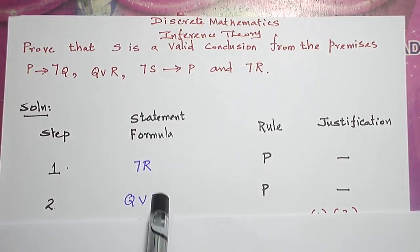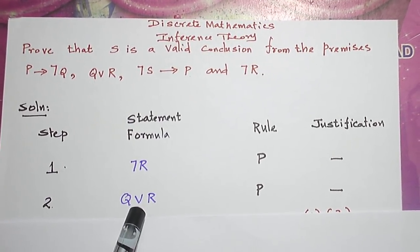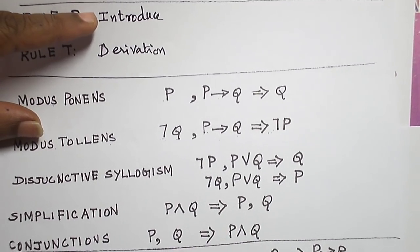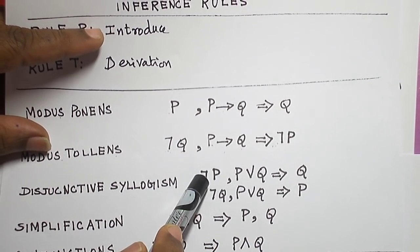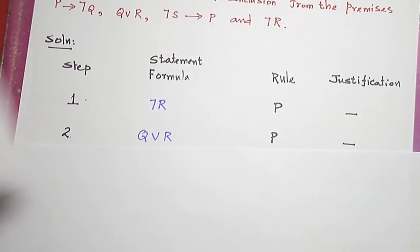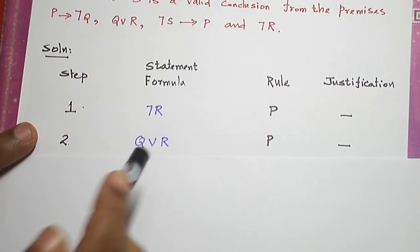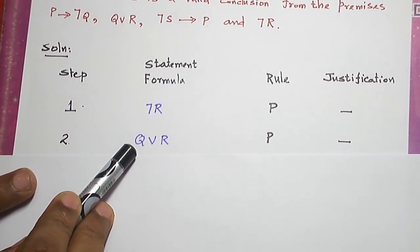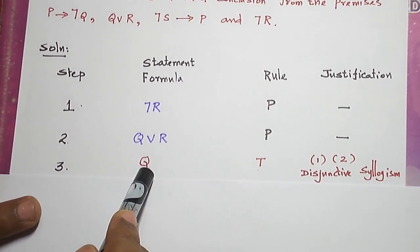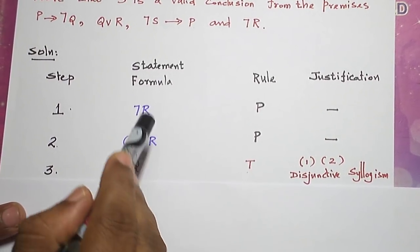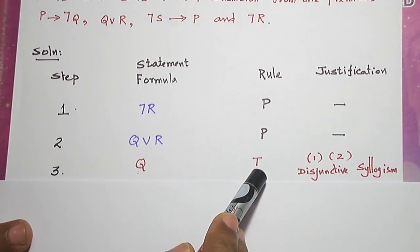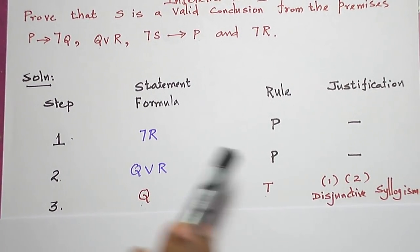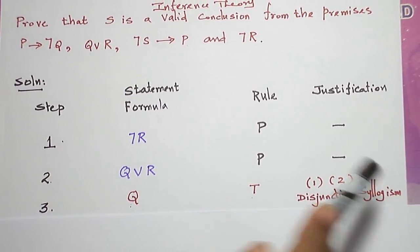Now I am going to combine these two premises. The connective is disjunction, so I shall use disjunctive syllogism. With Q or R and negation R, I derive the other formula, Q, as the conclusion. This derivation is done using rule T, justified by steps 1 and 2 using disjunctive syllogism.